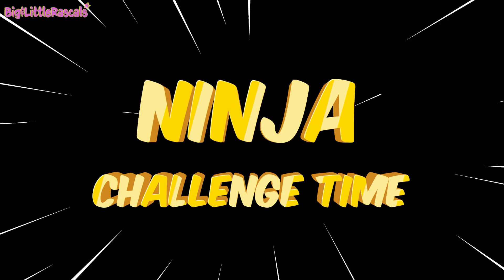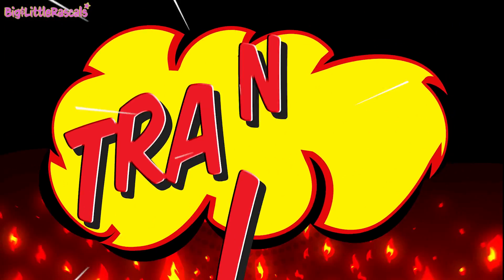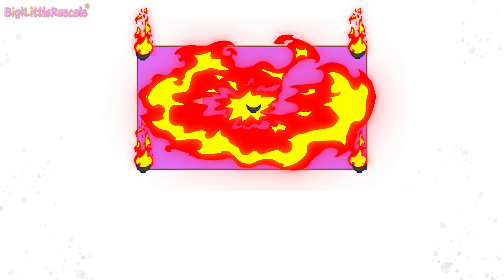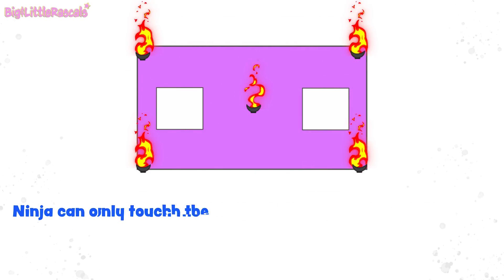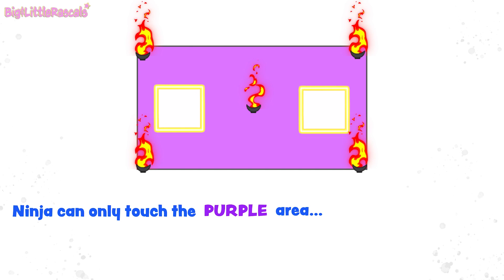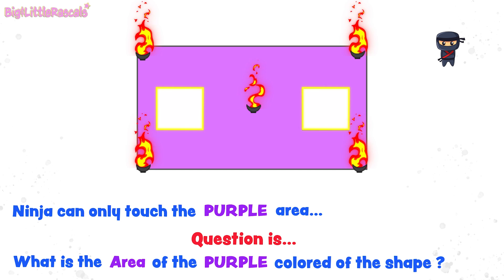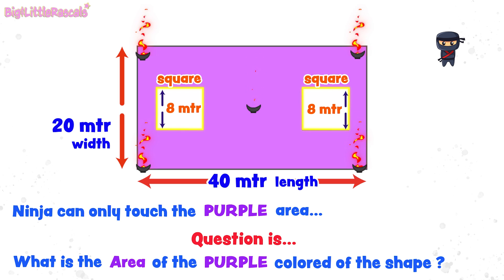Now, ninja's challenge time! Ready? Kampate! Let's go to ninja's training ground. Ninja's challenge! The rule is, ninja can only touch the purple colored area of the training ground. Ninja is not allowed to touch on any white colored areas. Oops! Almost! Come on, ninja! So, the question is, what is the area of the purple colored of the shape? Please feel free to freeze this video when you solve the challenge. We will investigate this together very soon!